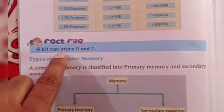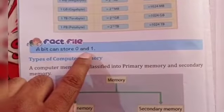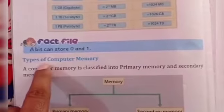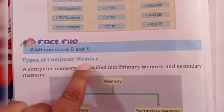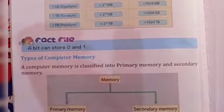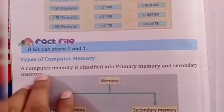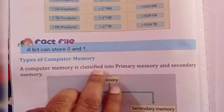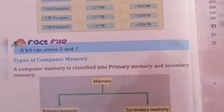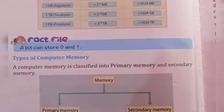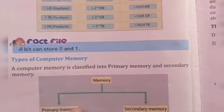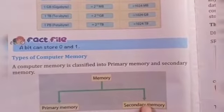A bit can store 0 and 1 — यानि bit में जो भी store रहता है वो 0 and 1 में रहता है। Types of computer memory: Computer memory is classified into primary memory and secondary memory — computer की memory two parts में divide होती है: primary memory और secondary memory।